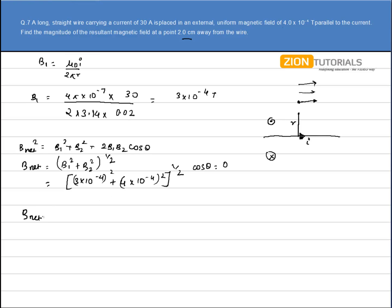I have net magnetic field as 5×10^-4 tesla. That is the answer.